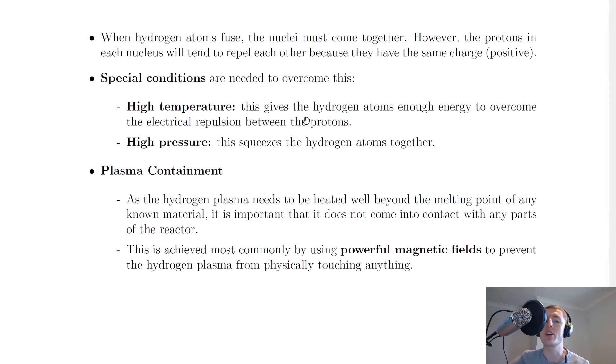These special conditions are a high temperature and a high pressure. A high temperature gives the hydrogen atoms enough energy to overcome the electrical repulsion between the protons, whereas the high pressure squeezes the hydrogen atoms together. A combination of high temperature and high pressure is going to allow plasma, the fourth state of matter, to exist in nuclear fusion reactors. But because the conditions are so hot, that causes problems.